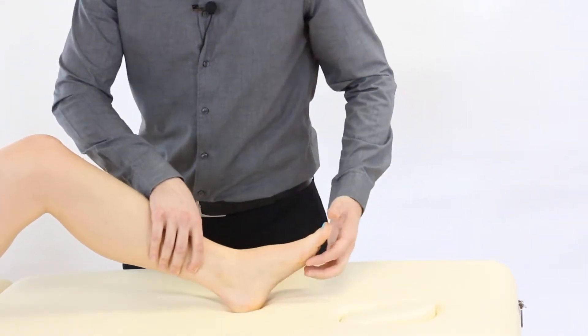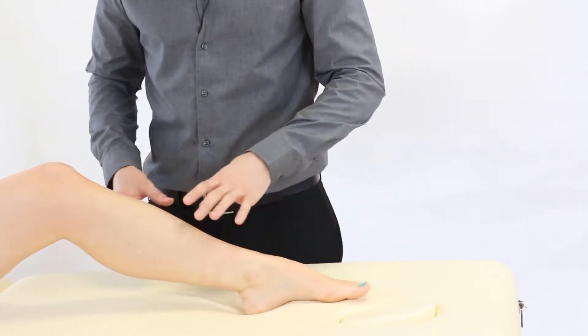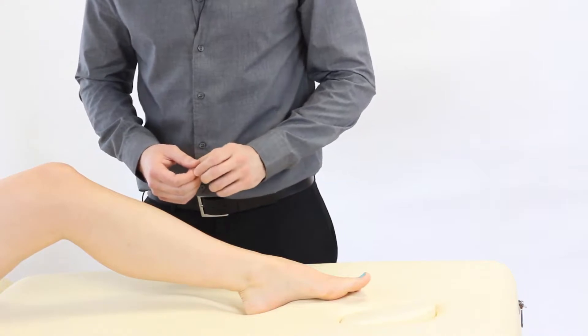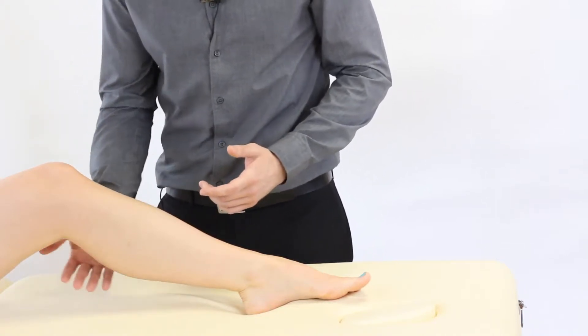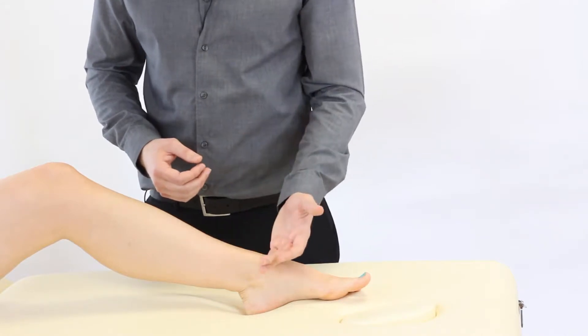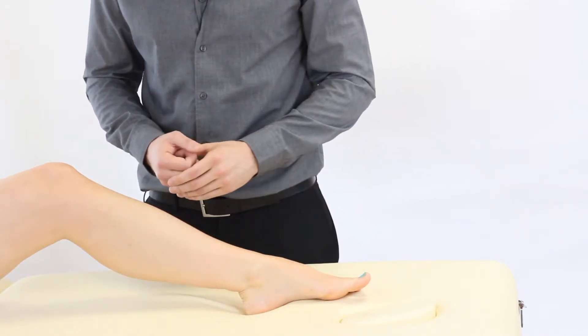The only real difference from this action relative to the last one is we're expecting more available dorsiflexion because we've slackened off the gastrocnemius, and the end feel is likely to be hard because it's a joint restriction that's stopping us going further.